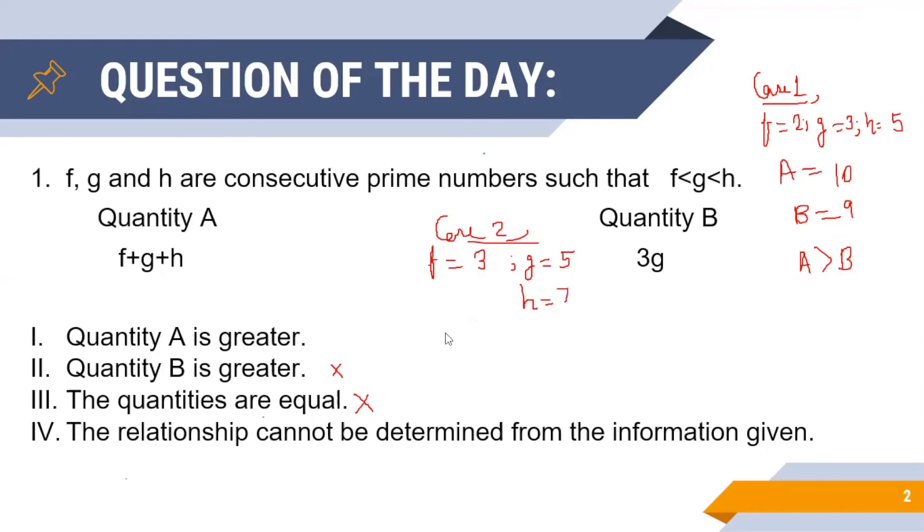So in case 2, A must be equal to 3 plus 5 plus 7 that is 15, while B is equal to 3 times 5 that is 15. Hence in case 2, A and B are equal.